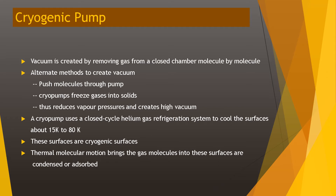Vacuum is created by removing gas from a closed chamber molecule by molecule. An alternate method is to push molecules through the pump. The cryopump feeds gas into solids, reducing vapor pressure and creating high vacuum. A cryopump uses a closed-cycle helium gas refrigeration system to cool surfaces to about 15 K to 80 K. These surfaces are known as cryogenic surfaces. Thermal molecular motion brings gas molecules to these surfaces, where they are condensed or absorbed.